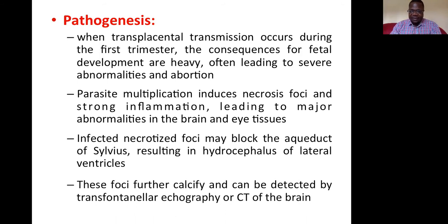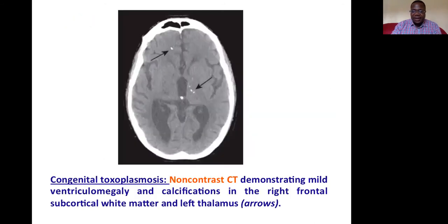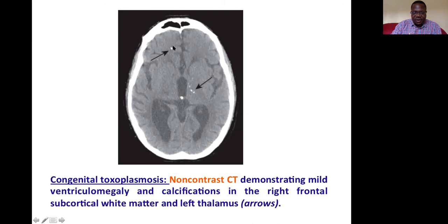The child will have calcification in the brain and hydrocephalus visible on CT scan. We can perform transfontanellar echography or a CT scan of the brain. On a non-contrast CT scan image, calcification appears as white spots — for example, in the right frontal subcortical white matter and in the left thalamus.